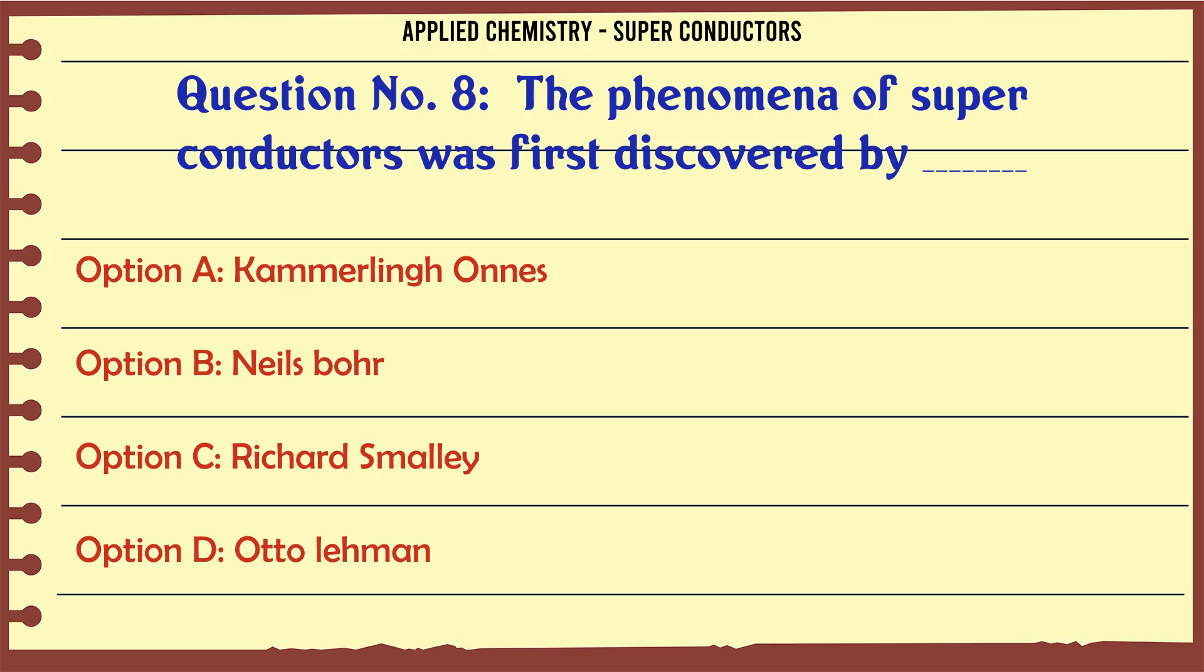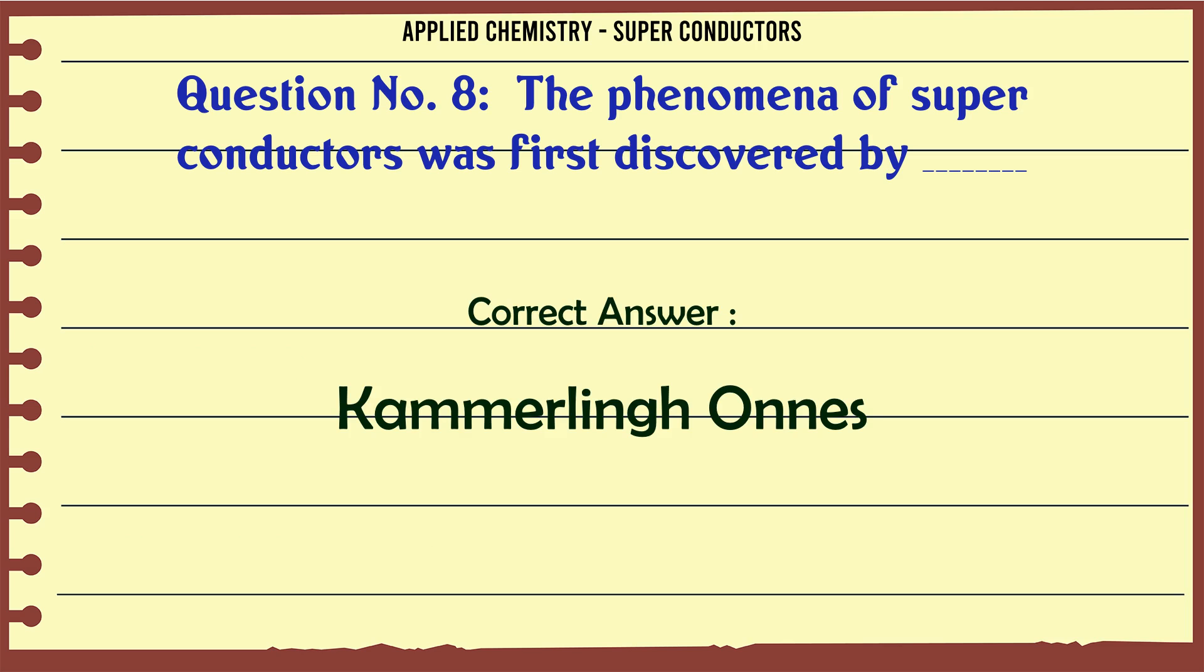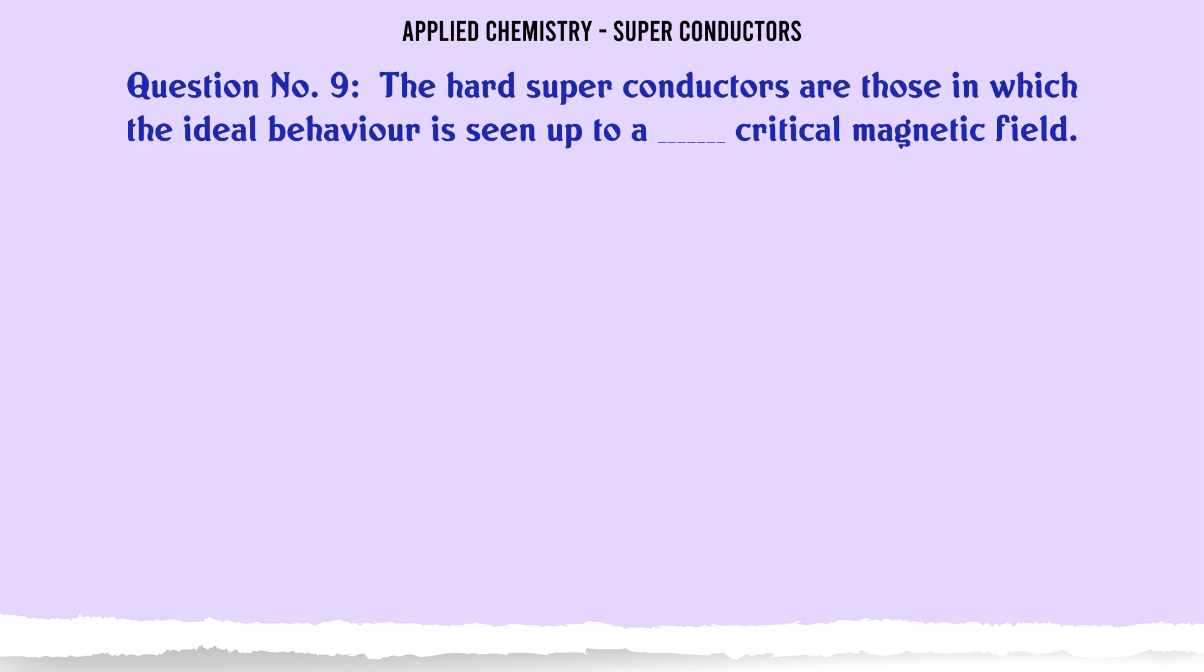The phenomena of superconductors was first discovered by: A Kamerlingh Onnes, B Niels Bohr, C Richard Smalley, D Otto Lehmann. The correct answer is Kamerlingh Onnes.